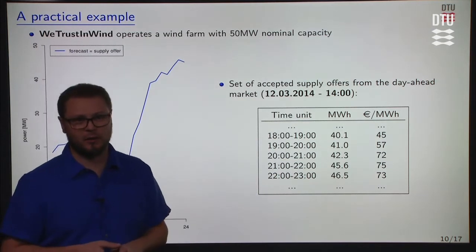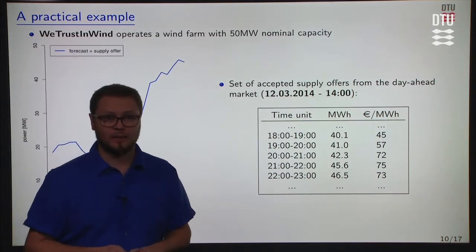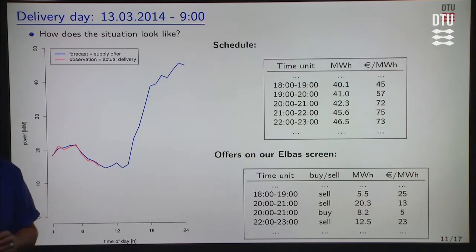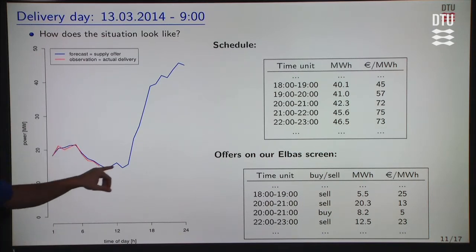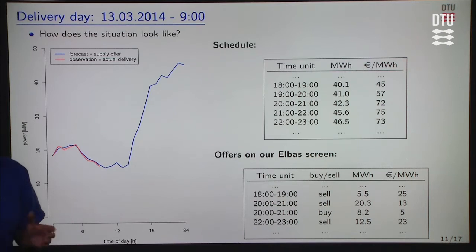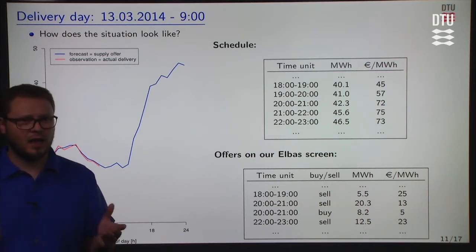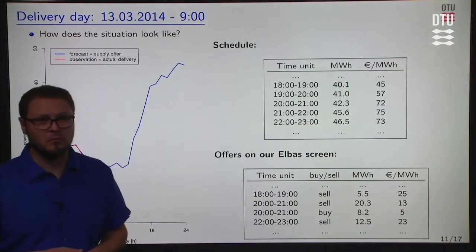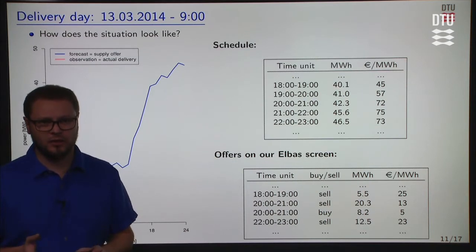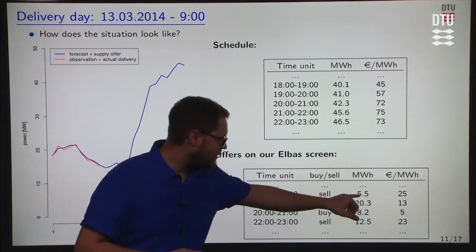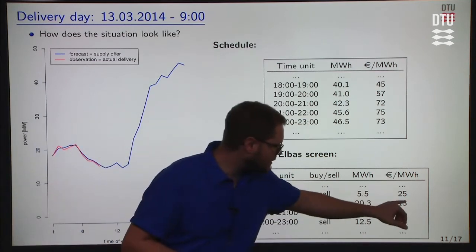These are the prices which come from the clearing of the day-ahead market. Now let's look at what's happening in practice. We are going through the day with this schedule and commitment. Beside the blue line that gives you the schedule, we have here in red what we are actually producing. For the first hours of the day — here up to 8 in the morning — it seems to be going very well. The forecast was very good and we are producing to schedule. We have traders looking at the intraday opportunities, and on our Elbas screen we have various offers for the evening — sell and buy offers with different quantities and different prices.